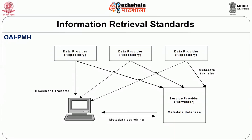Looking at the OAI-PMH diagram: there is a client — a harvester — requesting documents. Multiple repositories lined up as data providers (Repository 1, 2, 3) provide metadata. A service provider harvester maintains a metadata database. When it requests, metadata from all repositories is transferred into the harvester, which can then be used for metadata searching. When a user clicks a link, they are taken to the respective repository — original content is not stored in the harvester, only the metadata from various repositories.